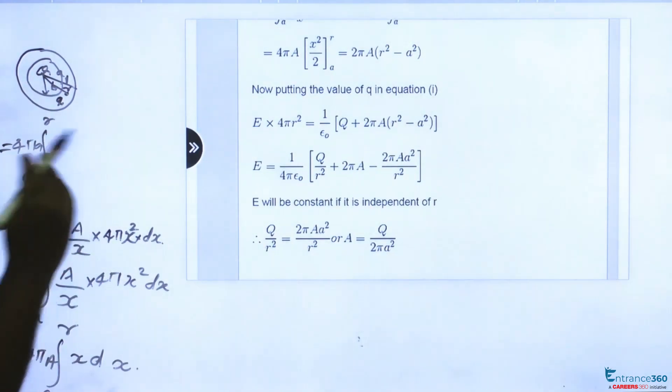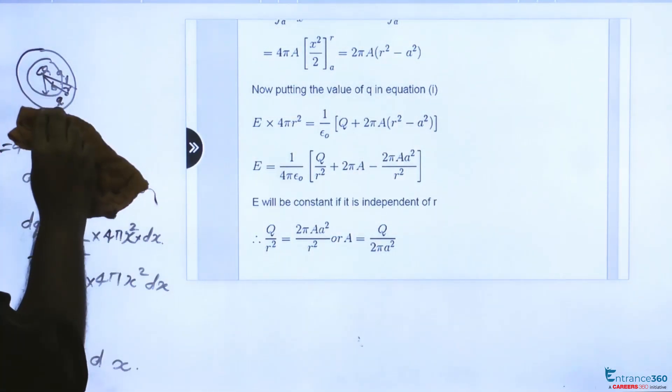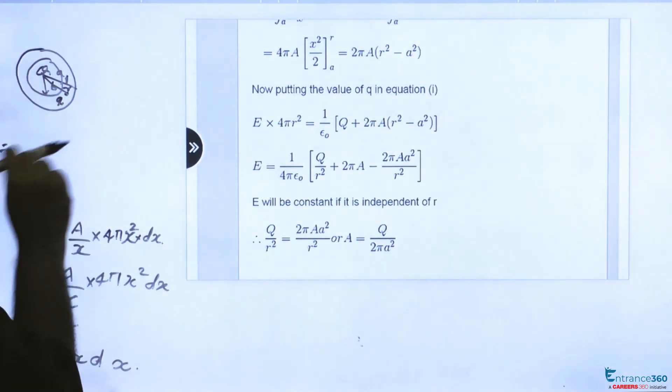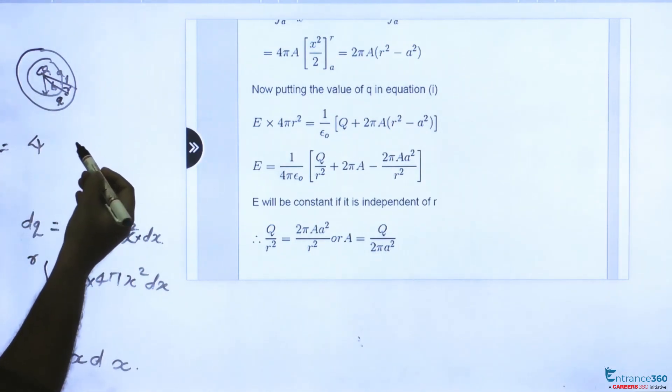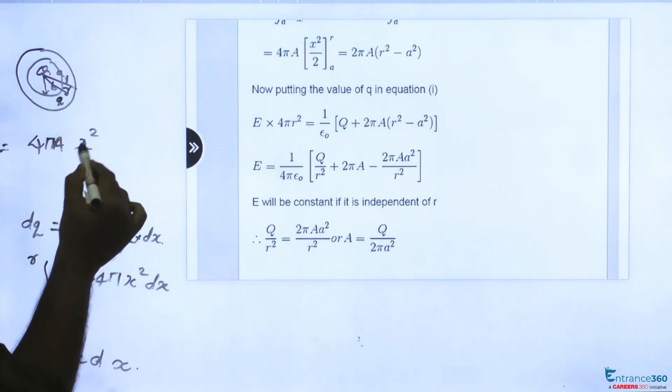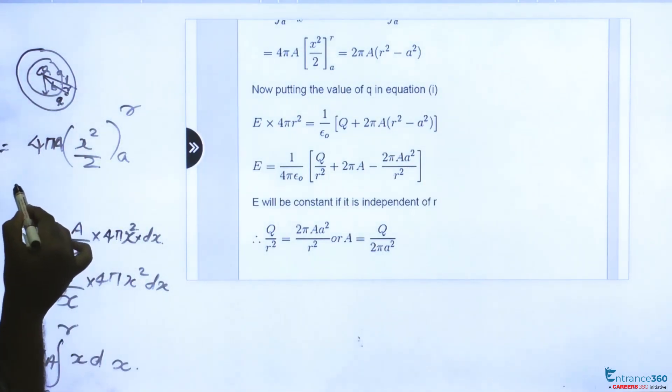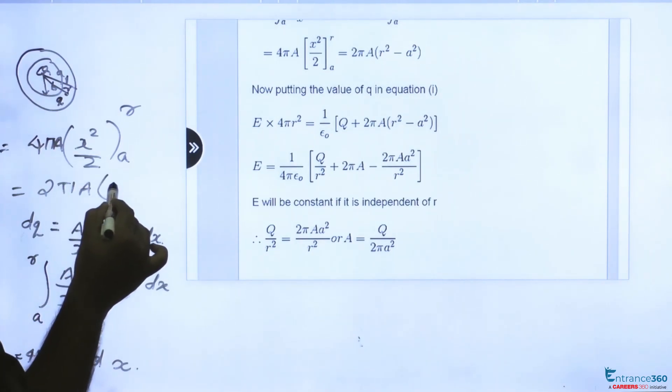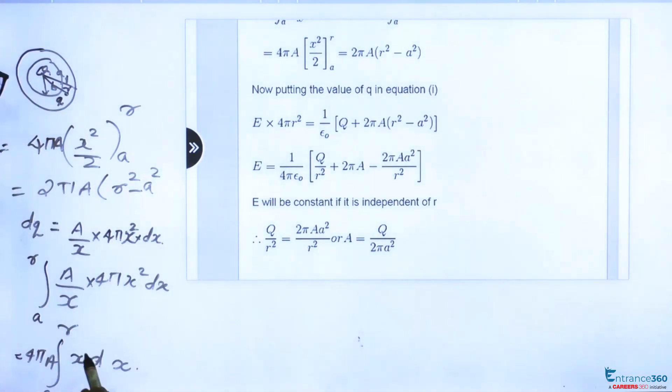So we can substitute the limits and write, it will be 4 pi A x square by 2, from A to R. It is equal to 2 pi A into R square minus A square. So this is our net charge.